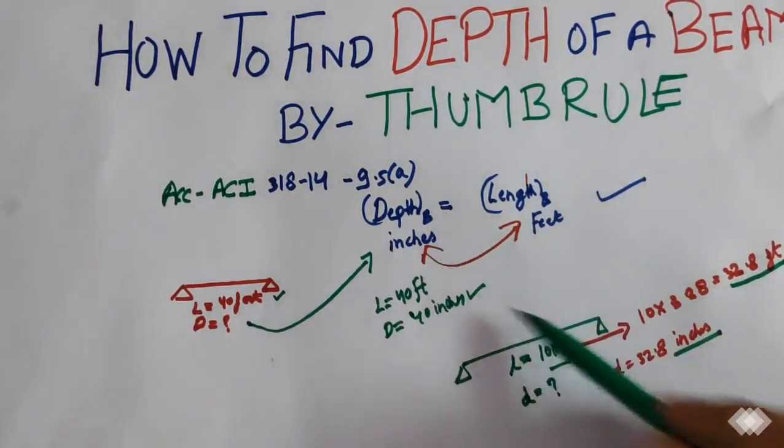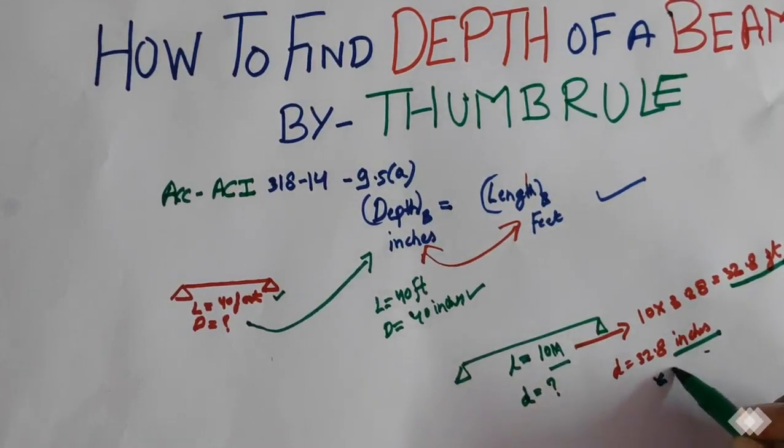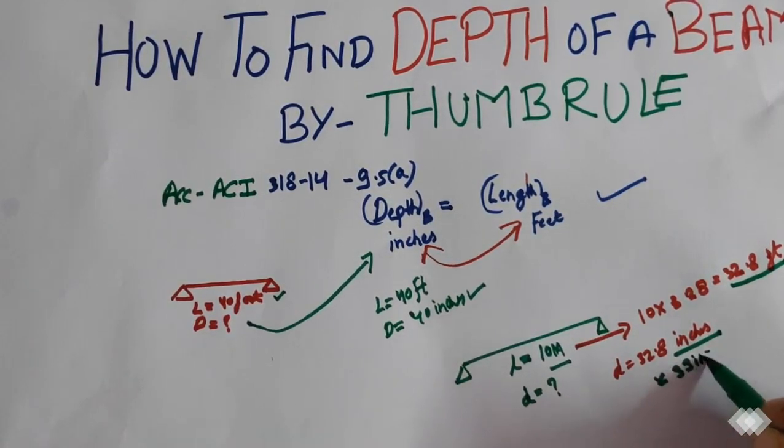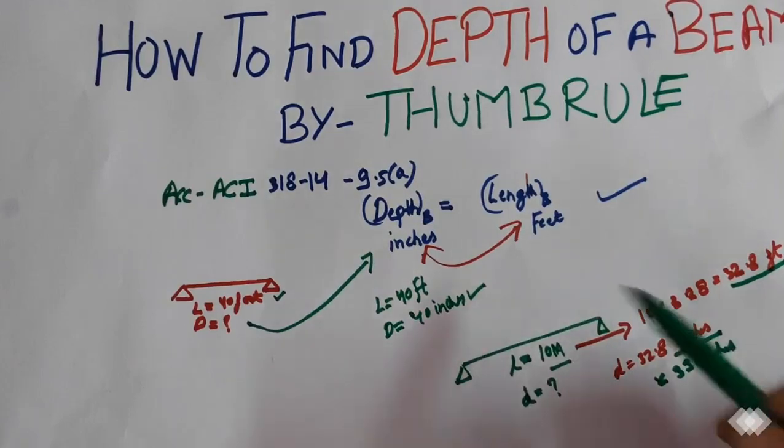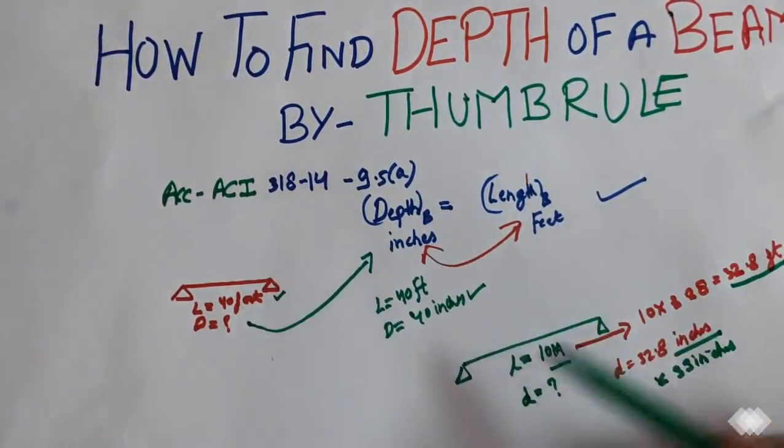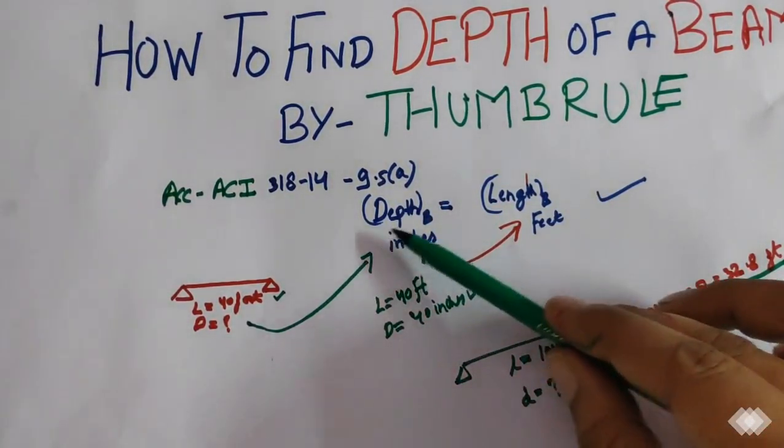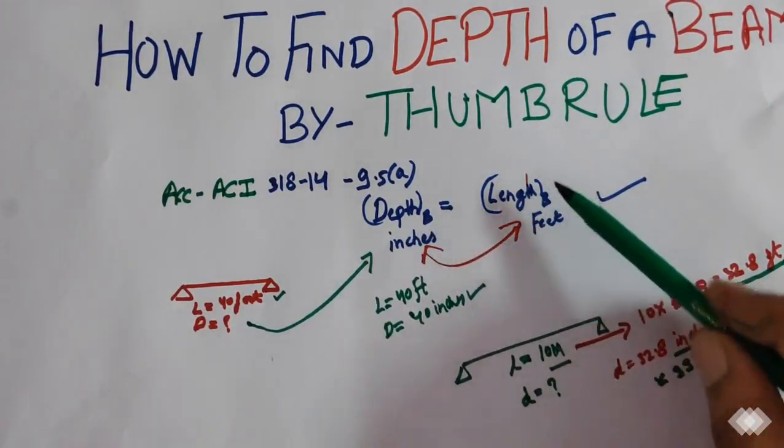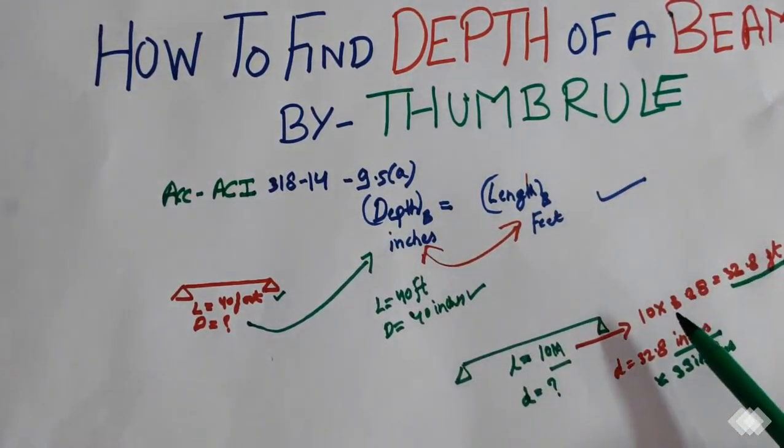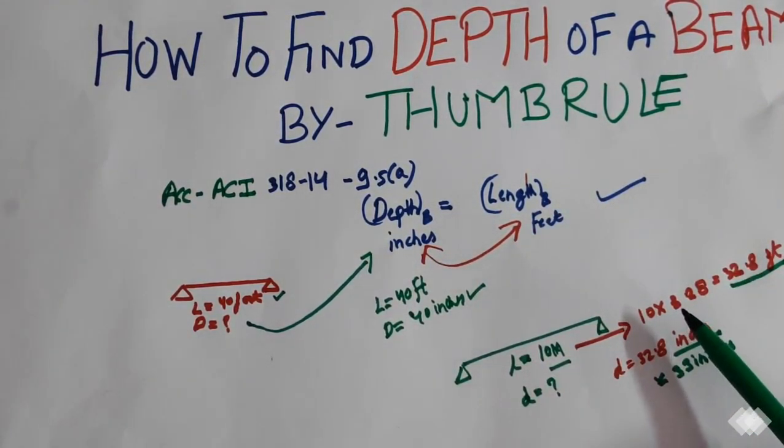Same here, the length of the beam in feet is equal to the depth of the beam in inches. So from this code of conduct we can say depth of beam in inches equals to the length of beam in feet. This is the basic thumb rule used in civil industry.